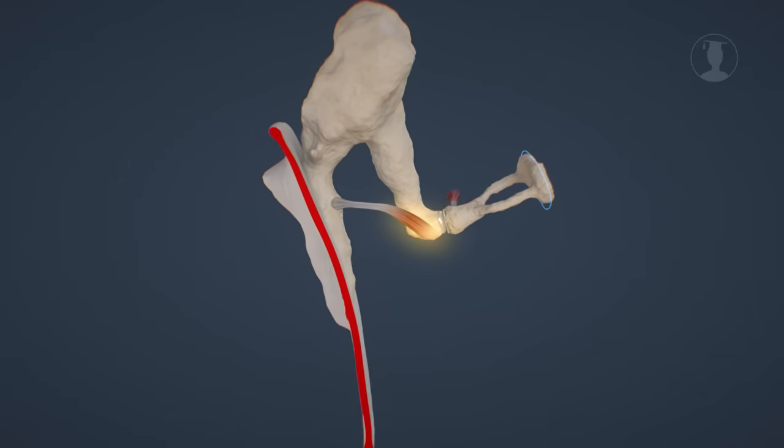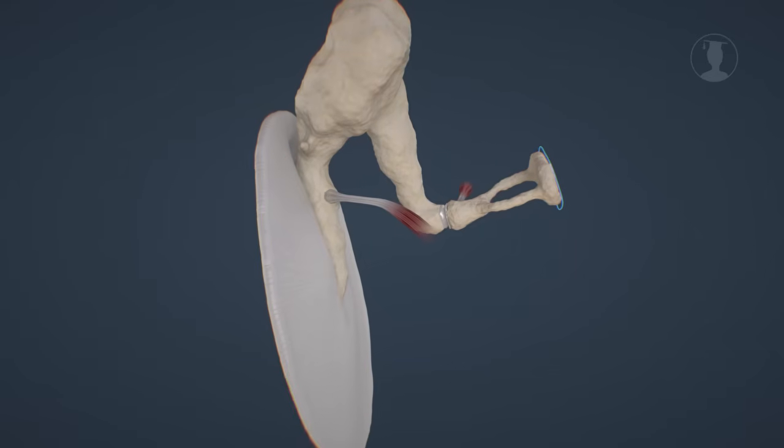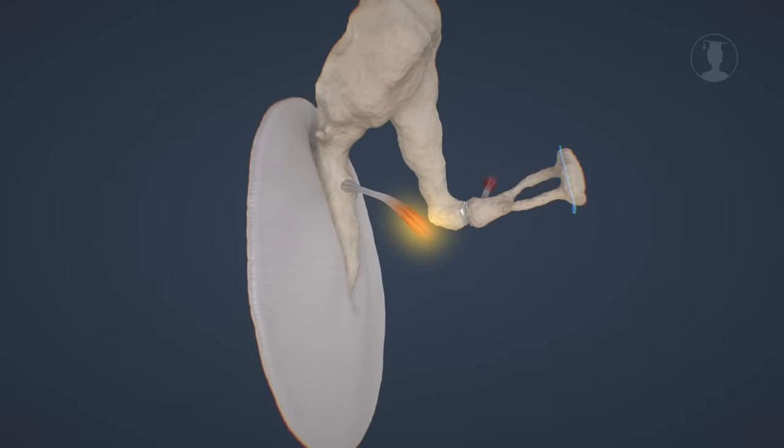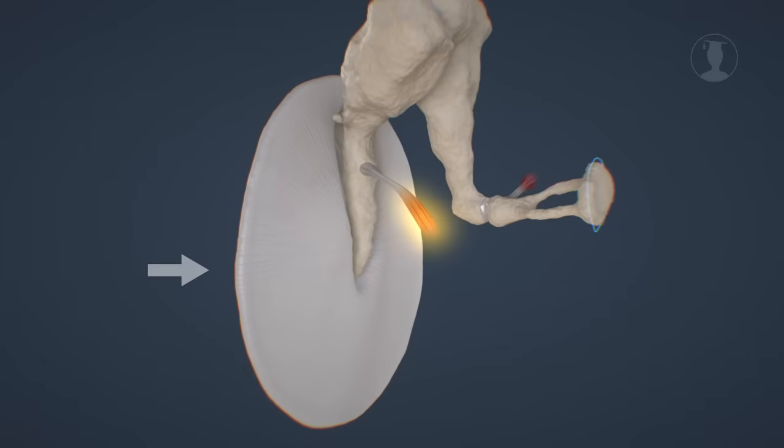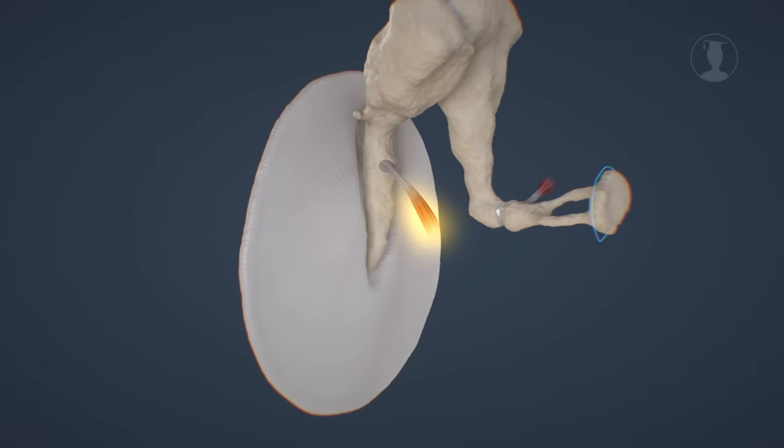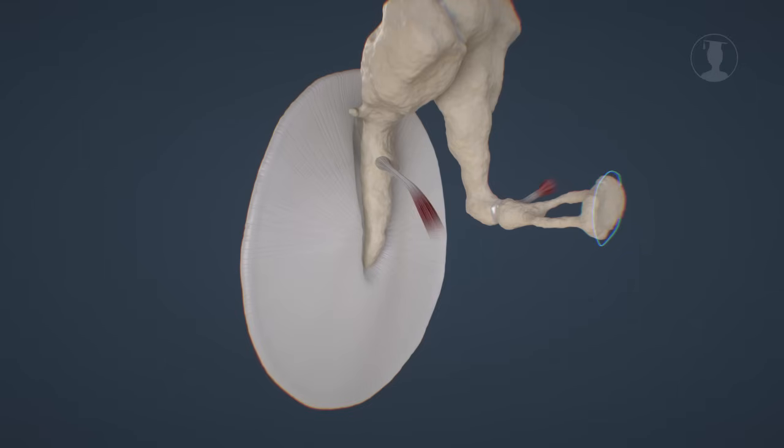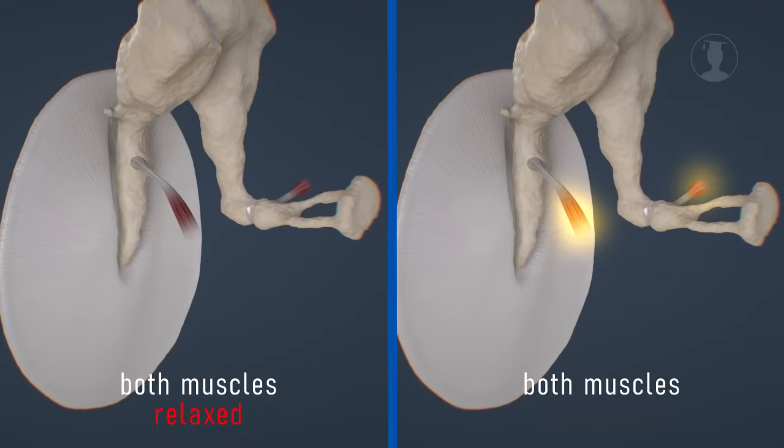Both muscles restrict the movement of the auditory ossicles as soon as the sound level is too high, so that the cochlea is protected from excessive pressure. Here we can see the movements of relaxed and contracted muscles at identical volumes for comparison.